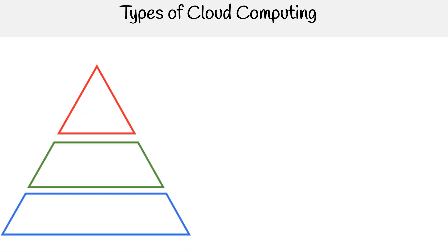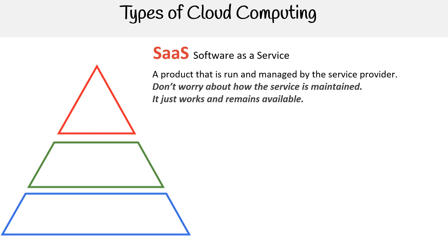Hey, this is Andrew Brown from ExamPro and we are looking at the different types of cloud computing. We have this nice pyramid on the left-hand side to help us understand how each type builds off the other, starting at the top of our pyramid. We have Software as a Service, also known as SaaS, and this is a product that is run and managed by the service provider.